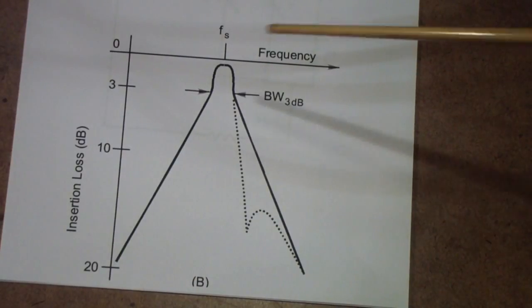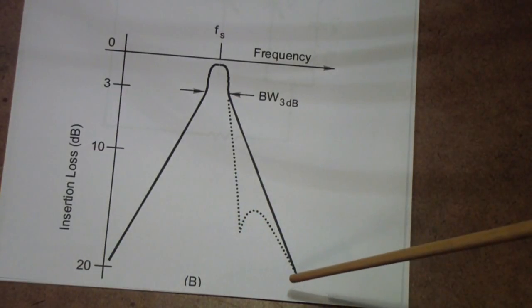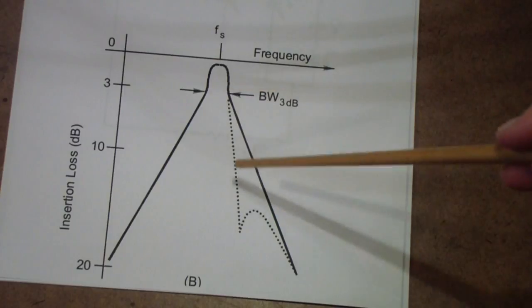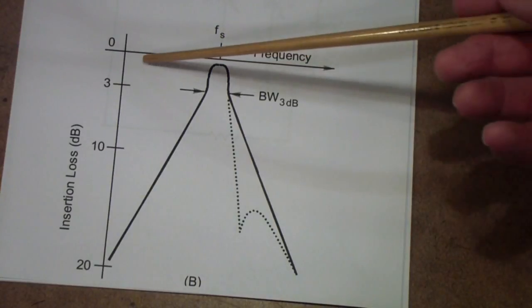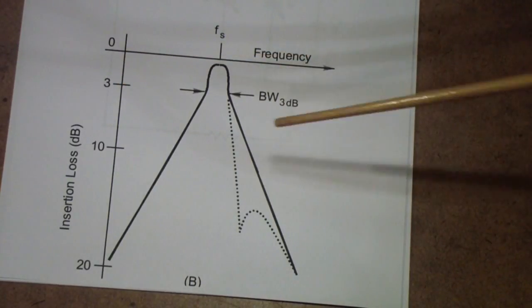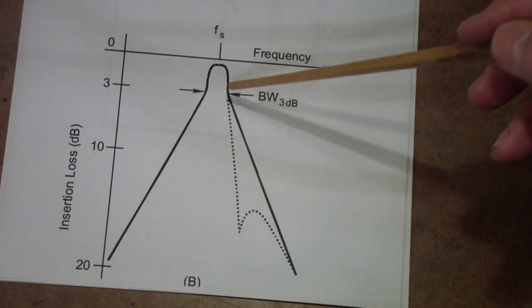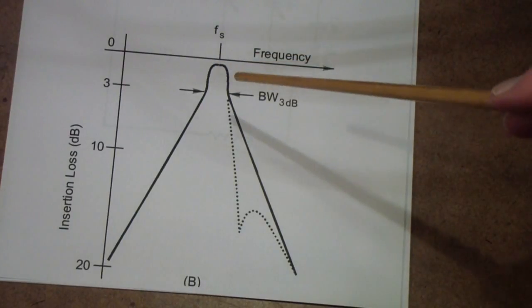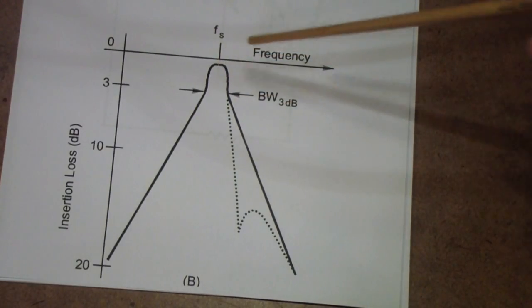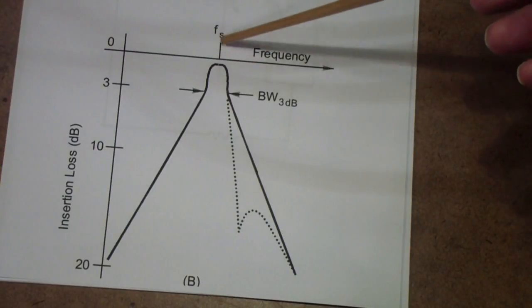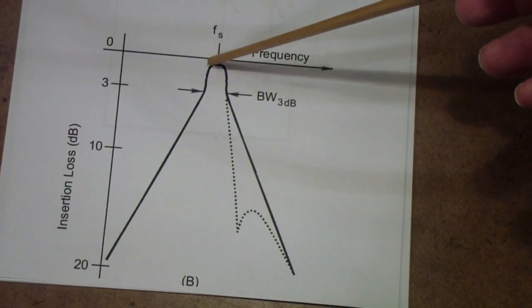This gives you an idea of the kind of sharp skirts that you can get with a crystal. We'll talk about this dotted line here a little later after we've gone through the circuit above. But for very little insertion loss, you see often less than 3 dB of insertion loss, you can get a very sharp skirt.